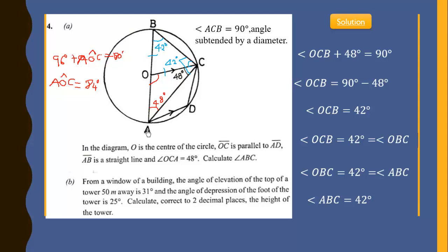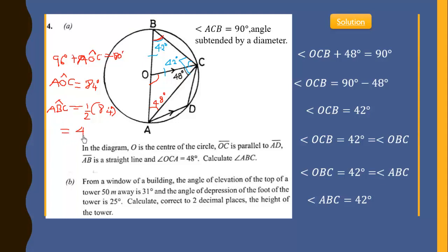Angle AOC is the angle subtended by chord AC at the center, and angle ABC is the angle subtended by the same chord at the circumference. By the inscribed angle theorem, angle ABC equals half of angle AOC, which is half of 84 degrees — giving us 42 degrees.